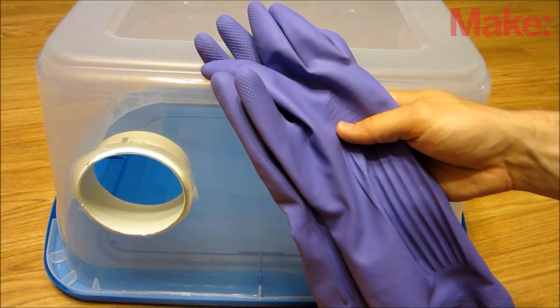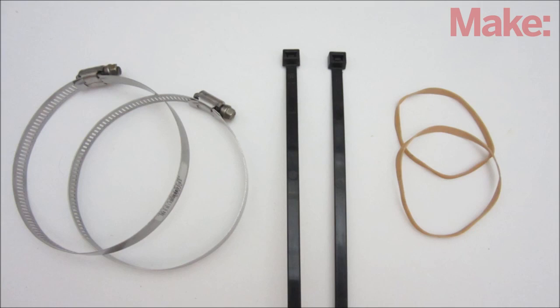For the gloves, I recommend using elbow length waterproof gloves. And to attach the gloves to the PVC pipe, you can use hose clamps, zip ties, or even strong rubber bands.